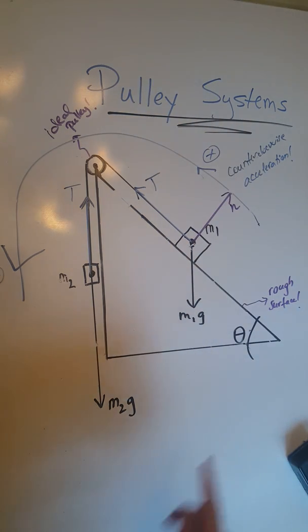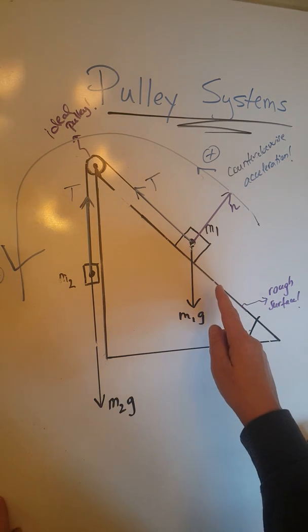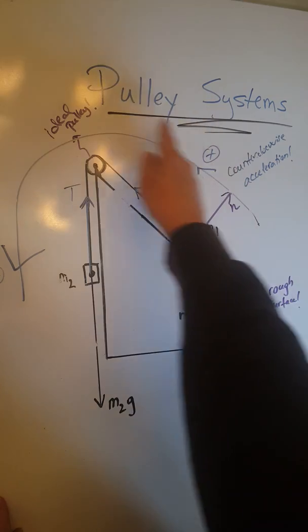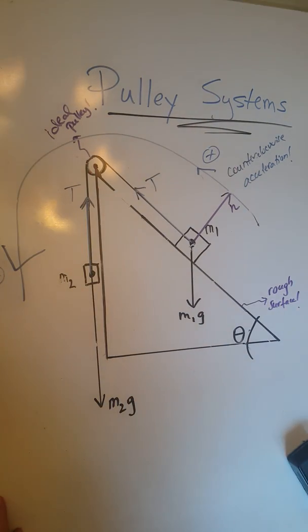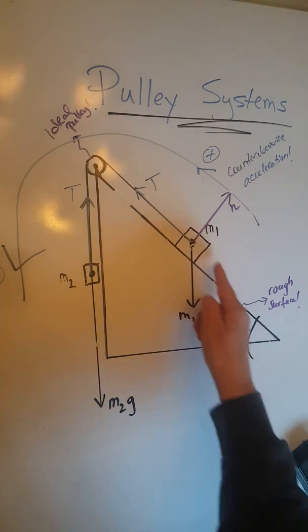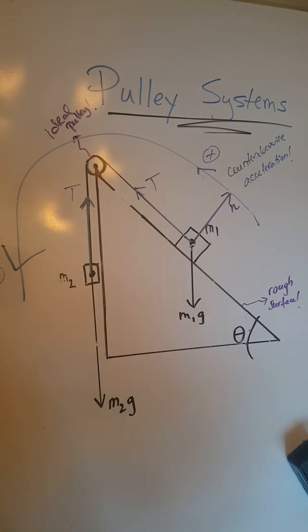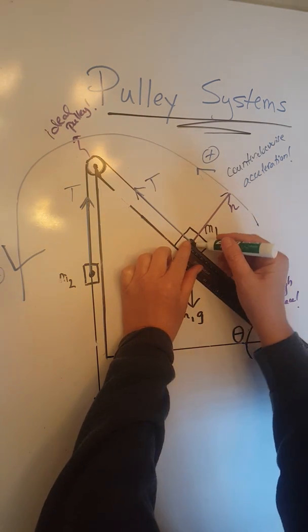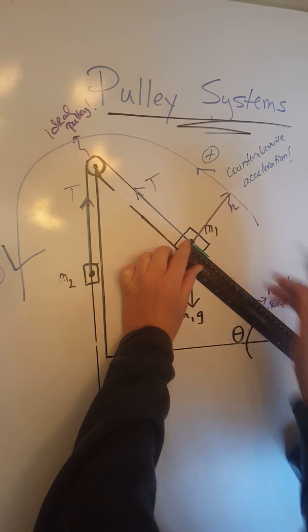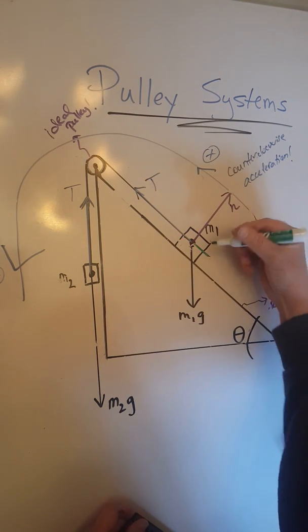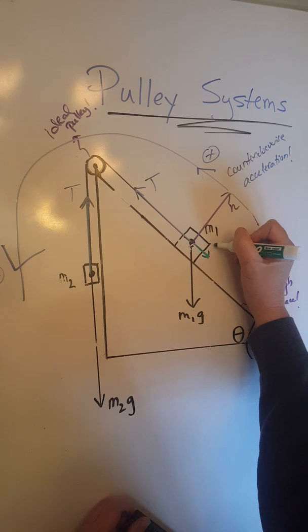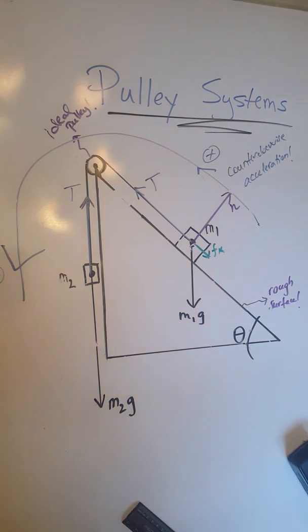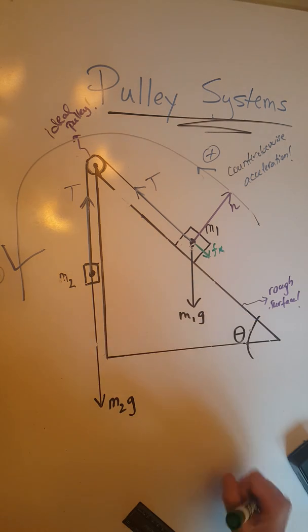And one more force, because this is a rough surface, there will be a force of friction in the opposite direction of motion. Knowing that this is a counterclockwise accelerated motion, the force of friction on M1 will have to be down the ramp. Let me draw that one, Fk. So these are the forces acting upon both these objects.